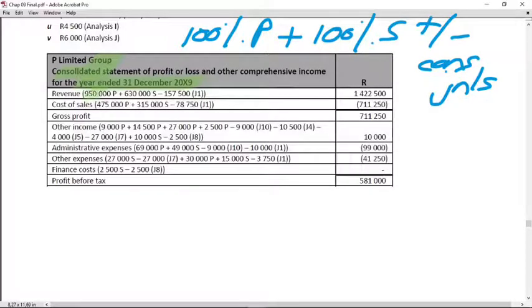Line by line, we start by adding 100% P to 100% S. This is good exam technique. All the amounts with a P or an S next to it indicates that it's the amount coming from the separate trial balances of the parent and the subsidiary. That immediately earns some marks when you have to do a consolidated SPLOCY and it's your starting point.